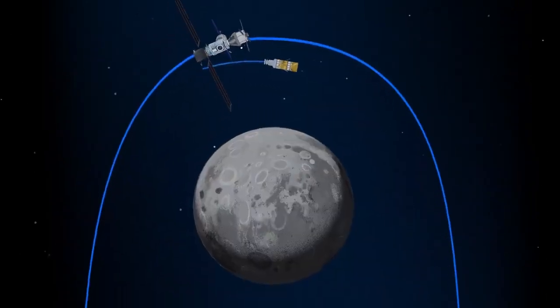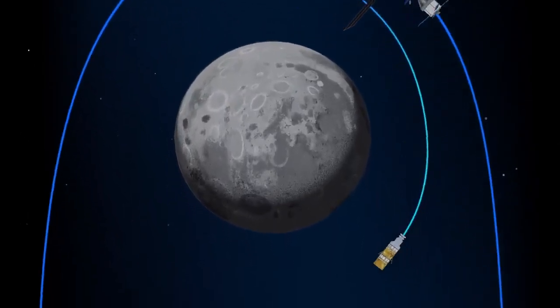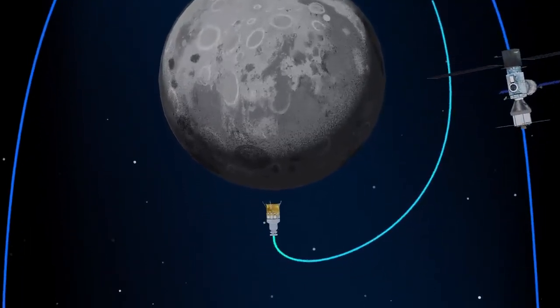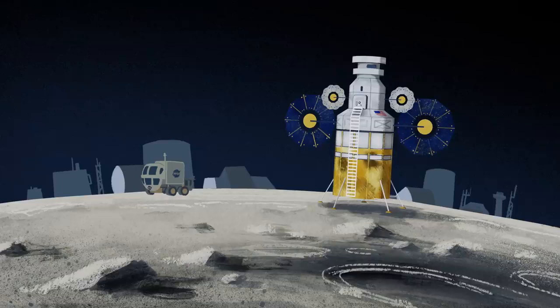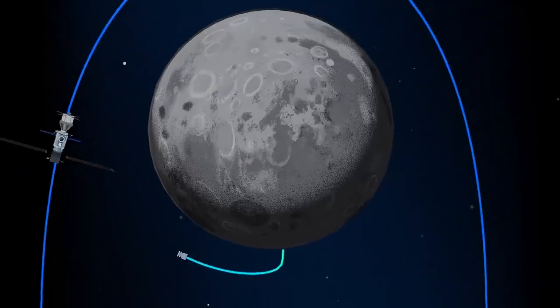The lunar lander system itself is built for three unique steps. Descending from the halo orbit of Gateway down to a low lunar orbit, descending from low lunar orbit to the surface, and once the lunar mission is complete, launching from the surface of the Moon and ascending all the way back to the orbiting Gateway.